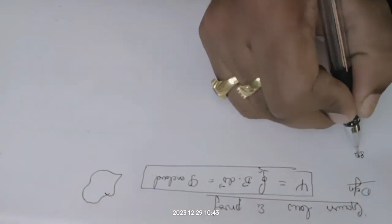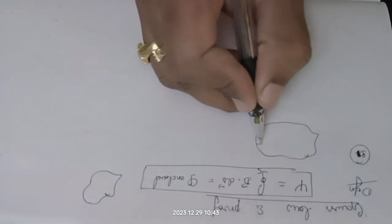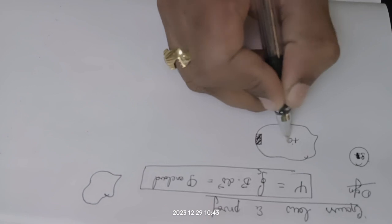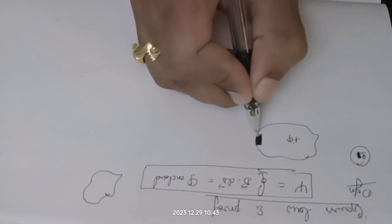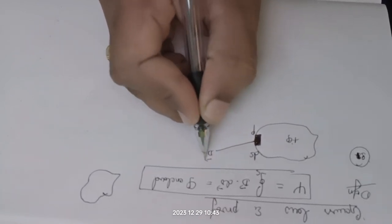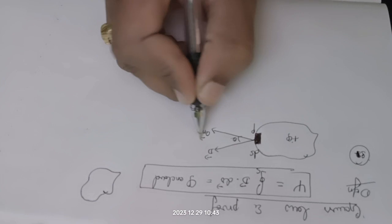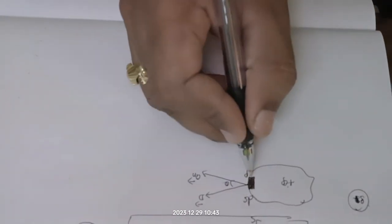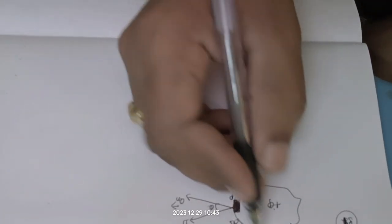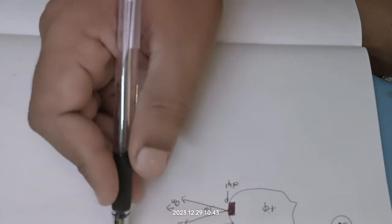We are going to prove this in two steps. In step number one, we will take some irregular surface. On this irregular surface enclosing charge Q, we take a differential surface at point P. We consider the D vector — the electric flux density — making an angle theta with the normal vector n. The differential flux is d-psi over this differential surface dS.